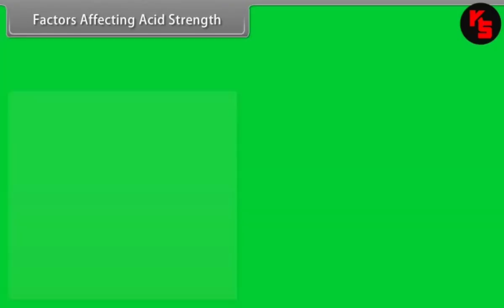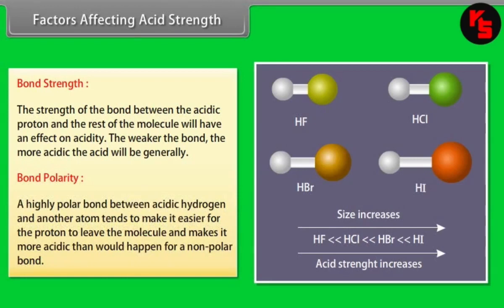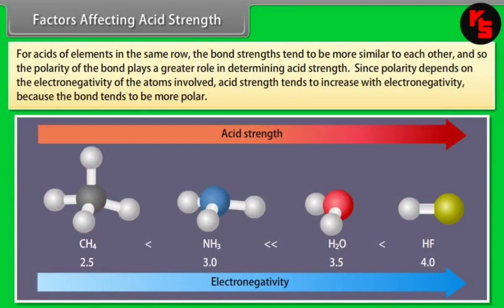Factors Affecting Acid Strength. Bond strength: the strength of the bond between the acidic proton and the rest of the molecule affects acidity — the weaker the bond, the more acidic the acid generally. Bond polarity: a highly polar bond between the acidic hydrogen and another atom makes it easier for the proton to leave, making the acid stronger. For acids of elements in the same row, bond strengths are more similar, so polarity plays a greater role. Acid strength tends to increase with electronegativity because the bond becomes more polar.